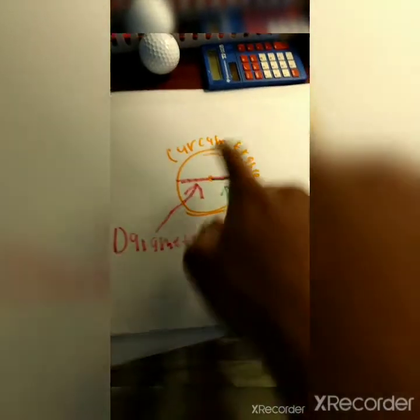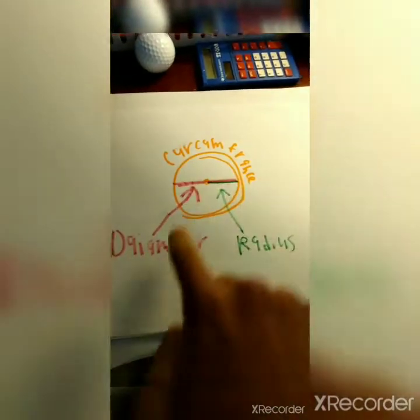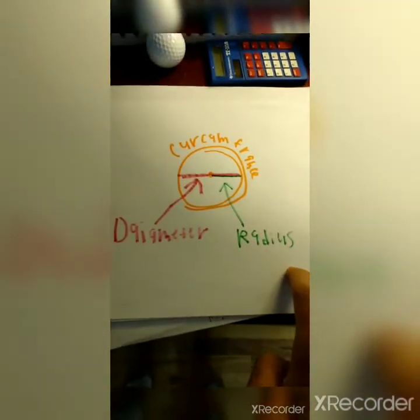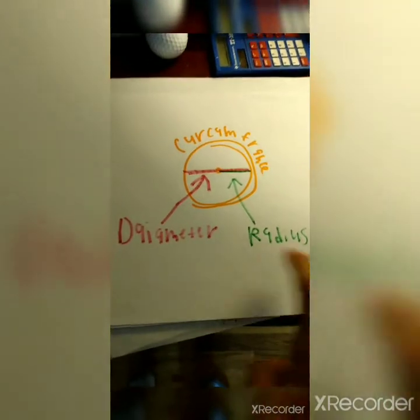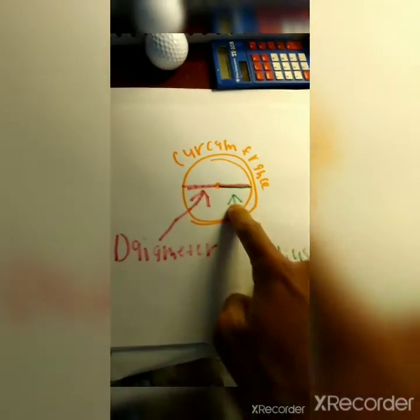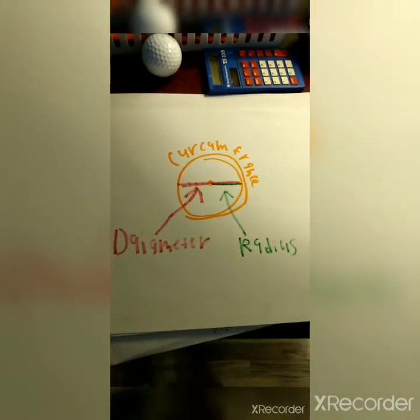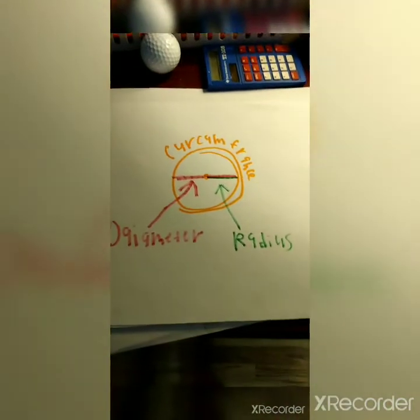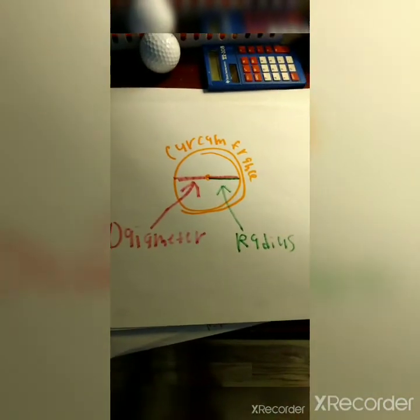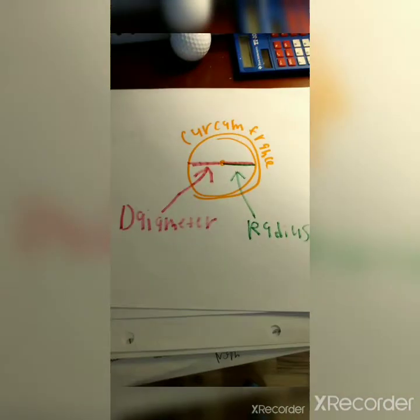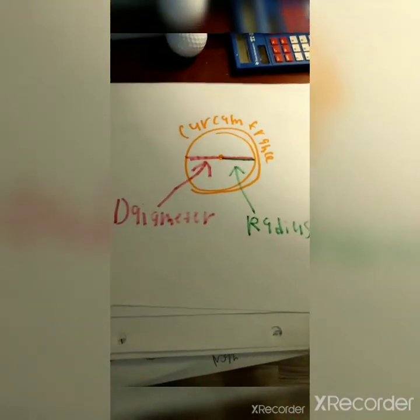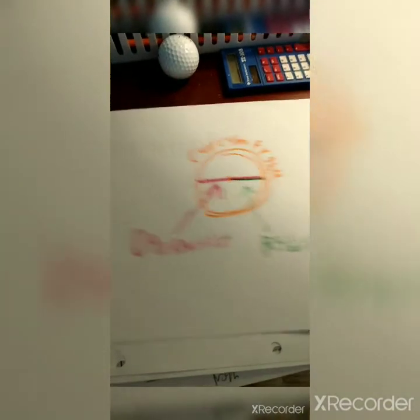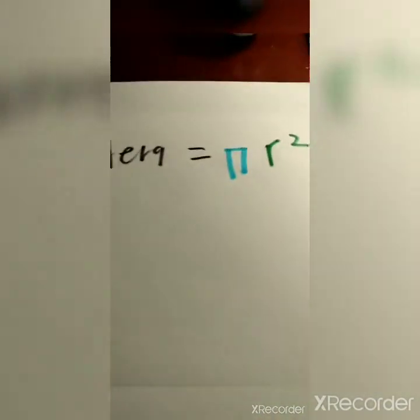So this is a circle, and this is a diagram of what each part of the circle is named. These definitions are going to appear in the formula — the formula of the circle.